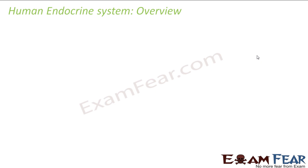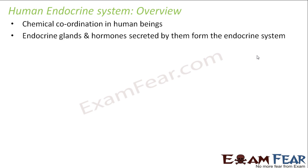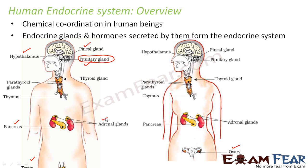Let us have a quick overview of the human endocrine system — the chemical coordination in human beings. Endocrine glands and hormones secreted by them form the endocrine system. Here we have an overview of all the glands in a human male and female. The only difference is the reproductive organs: ovaries in females and testes in males. Other glands include the hypothalamus, pineal, and pituitary — present in the brain. The pituitary is the master gland. Parathyroid and thyroid are in the neck region. The pancreas secretes insulin and glucagon, and the adrenal glands secrete emergency hormones.